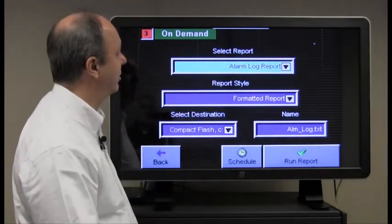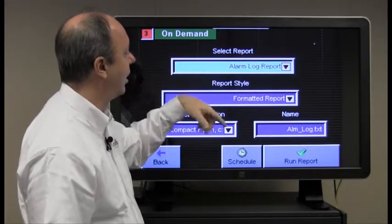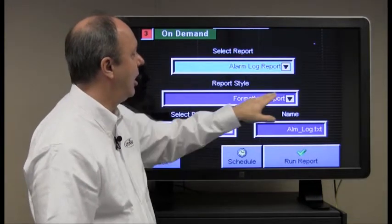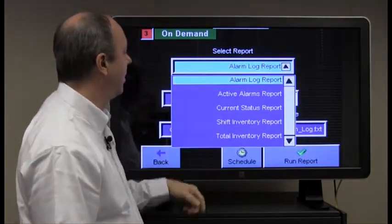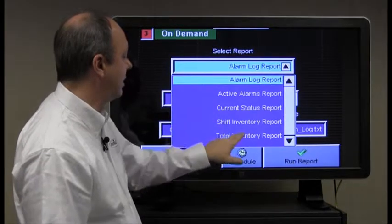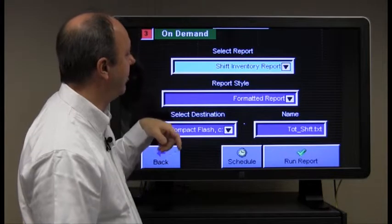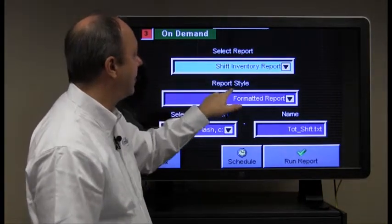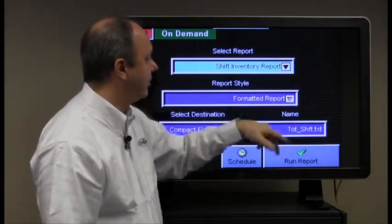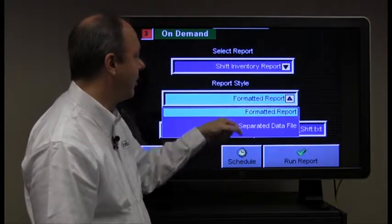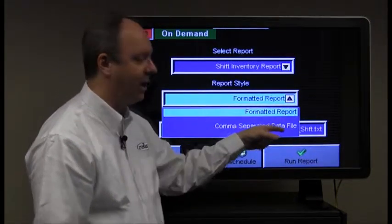Each of these are at a default position. So on select report, the default is the alarm log. We're talking about totals, so let's select the inventory report. So we've selected this is the report type we want. The style, we have two choices.